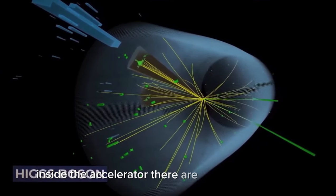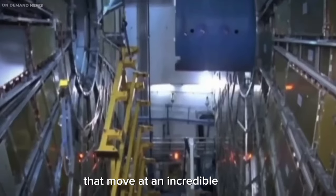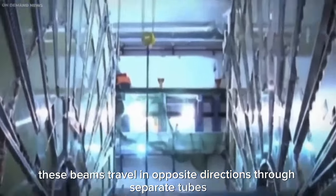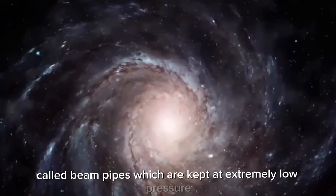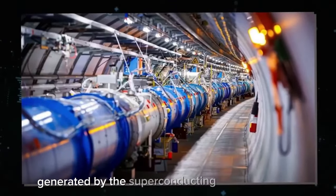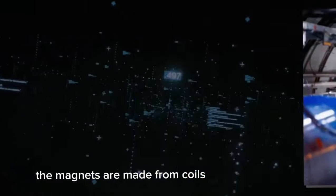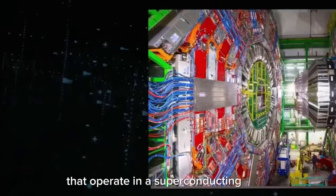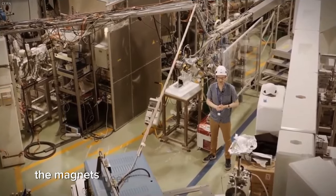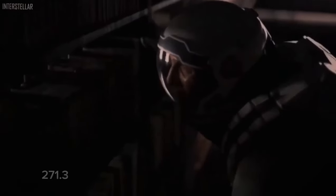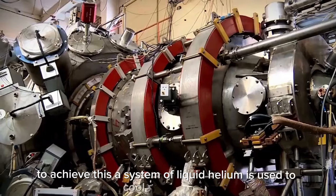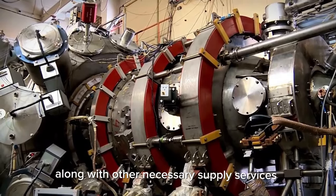Inside the accelerator, there are two beams of high-energy particles that move at an incredible speed, almost as fast as light, before they are directed to collide. These beams travel in opposite directions through separate tubes called beam pipes, which are kept at extremely low pressure. The beam pipes then follow a circular path around the accelerator due to a powerful magnetic field generated by the superconducting electromagnets. The magnets are made from coils of special electric cables that operate in a superconducting state, allowing electricity to flow without resistance or energy loss. To maintain this superconducting state, the magnets need to be cooled to a temperature of minus 271.3 degrees Celsius, which is colder than outer space. To achieve this, a system of liquid helium is used to cool the magnets, along with other necessary supply services throughout the accelerator.